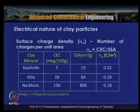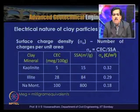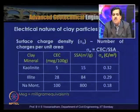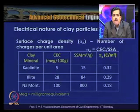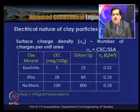Another reason is the surface charge density, called sigma_0, which is the number of charges per unit area. For kaolinite, the cation exchange capacity (CEC) is 5 mg equivalents per 100 g and specific surface area (SSA) is 15 m²/g, giving sigma_0 = 0.32 charges/m². For sodium-based montmorillonite, with CEC of 100 mg equivalents per 100 g and SSA of 800 m²/g, the surface charge density is about 0.18 charges/m² — low because of the higher surface area.